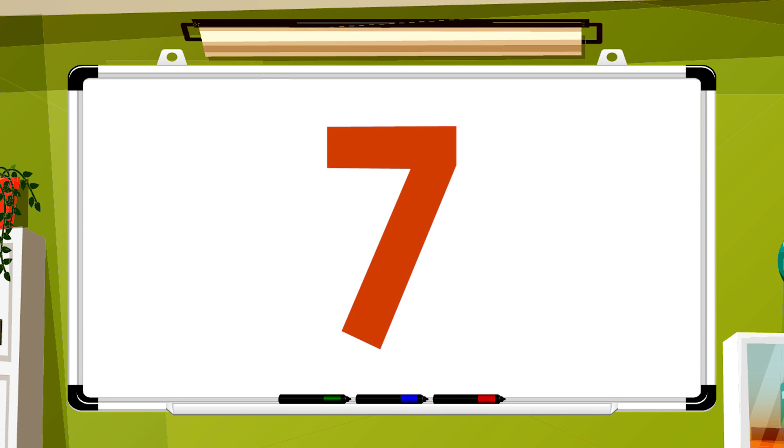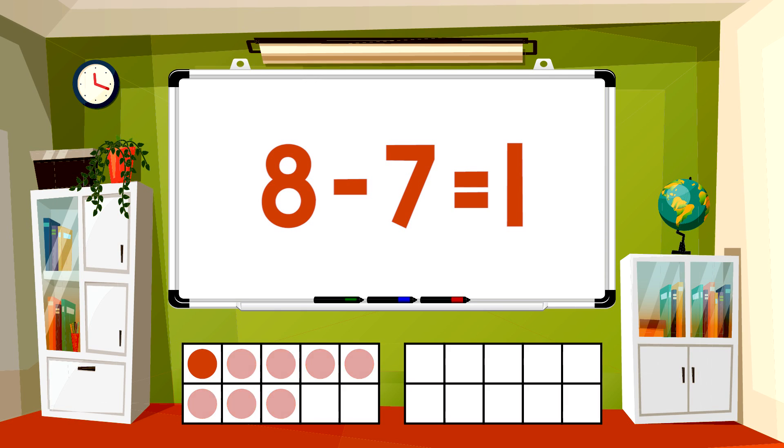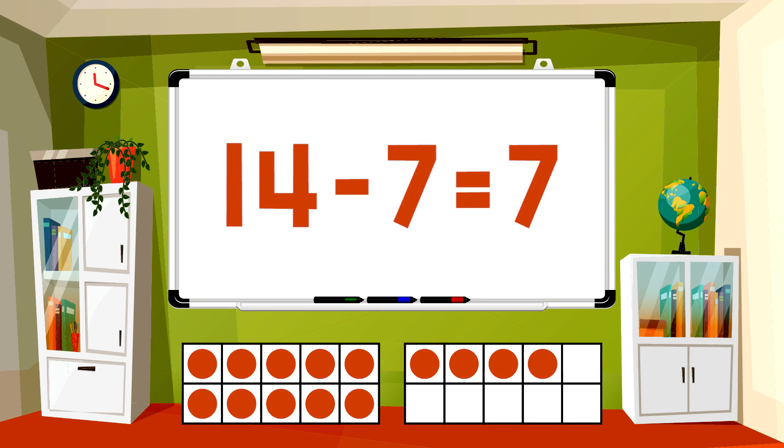Subtract 7 from each number. 8-7 equals 1. 15-7 equals 8. 10-7 equals 3. 14-7 equals 7.